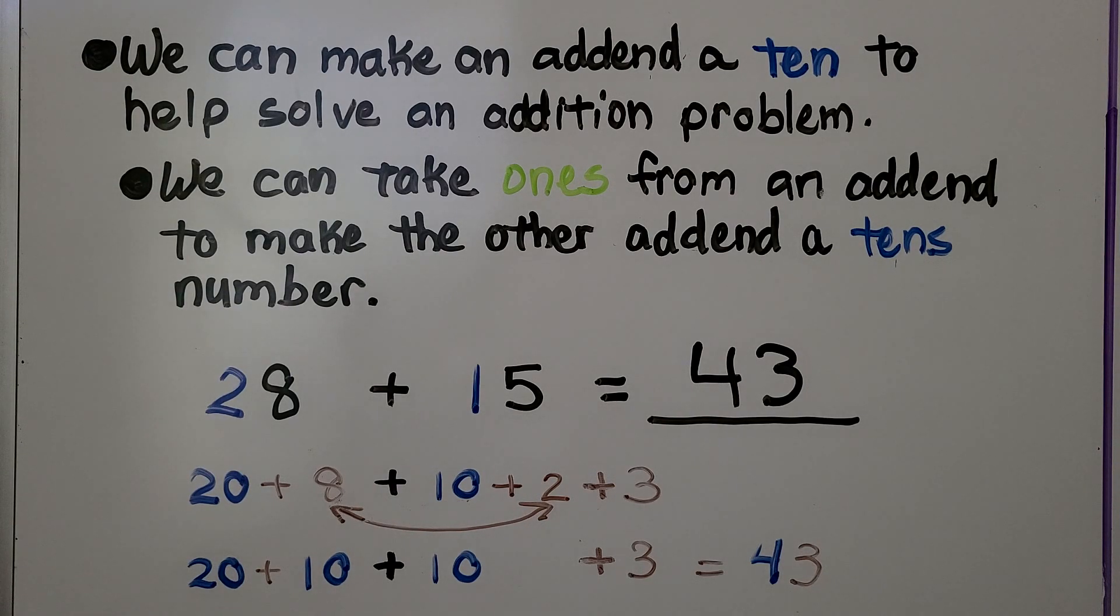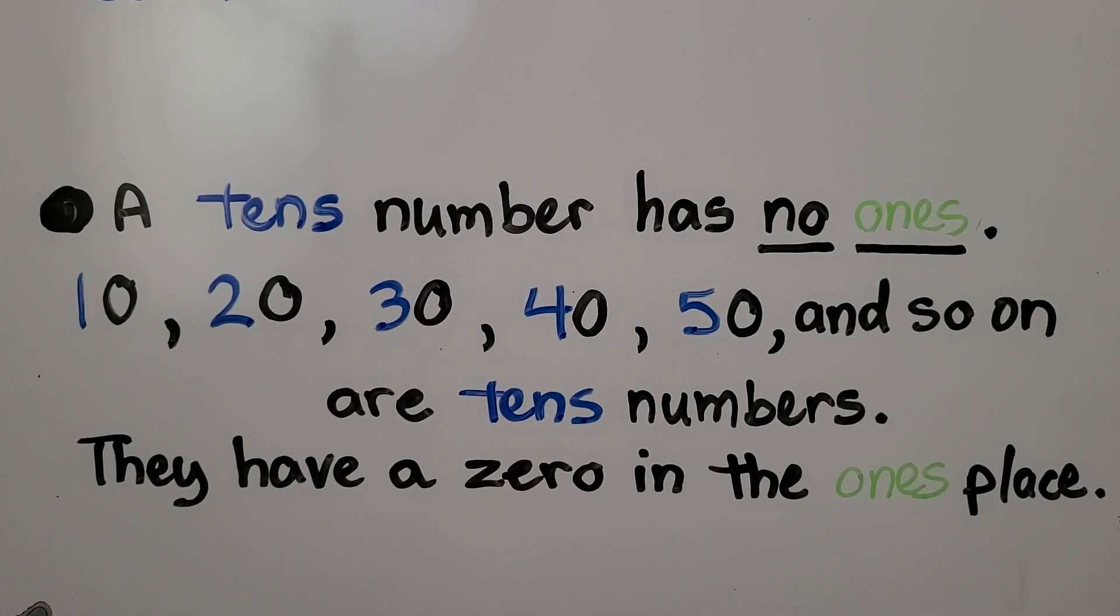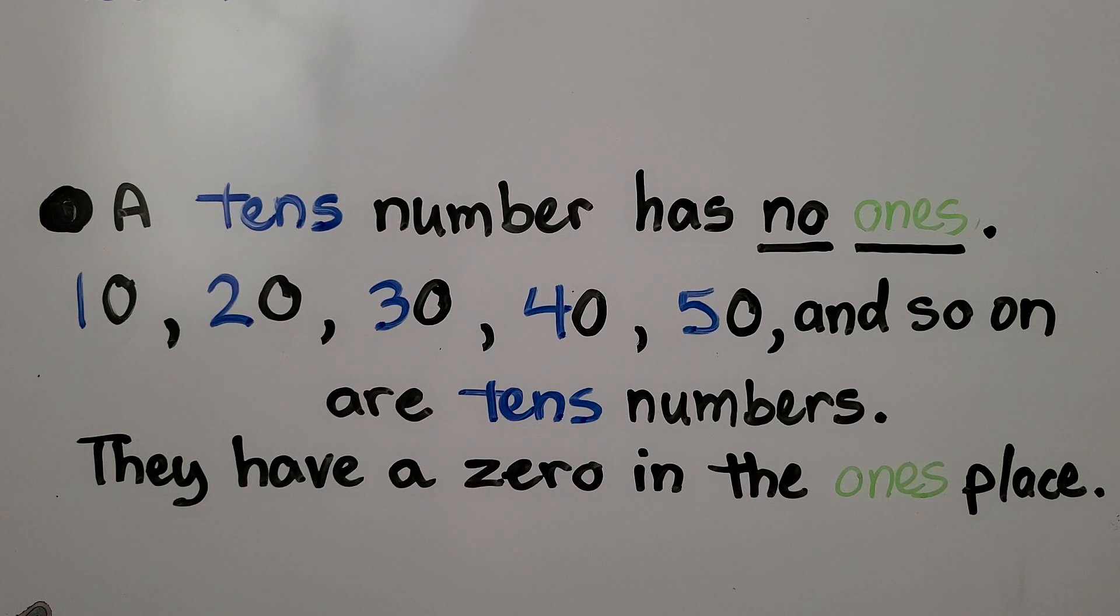So let's see how we can do this. A tens number has no ones. 10, 20, 30, 40, 50, and so on are tens numbers. They have a zero in the ones place.